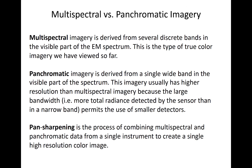What we have seen in previous modules is known as multispectral imagery — essentially just various channels in different bands. True color imagery derived from GOES, for example, is derived from a multispectral combination of bands in the shortwave. Panchromatic bands are a single wide band in the visible spectrum. They are usually the highest resolution channel available on an Earth observation satellite; however, panchromatic data will often be presented in grayscale.